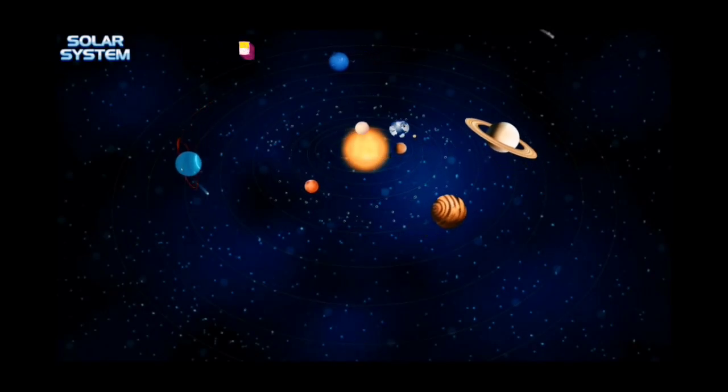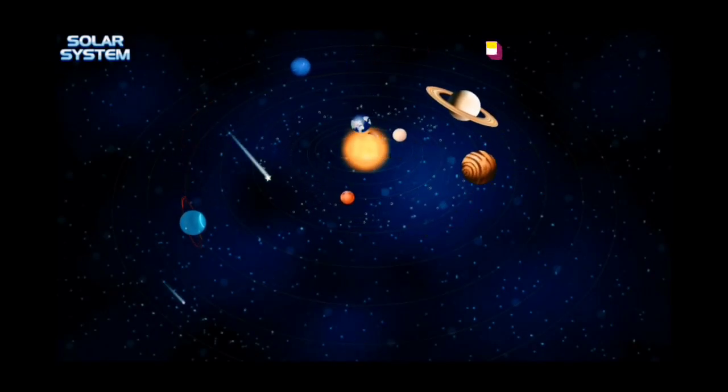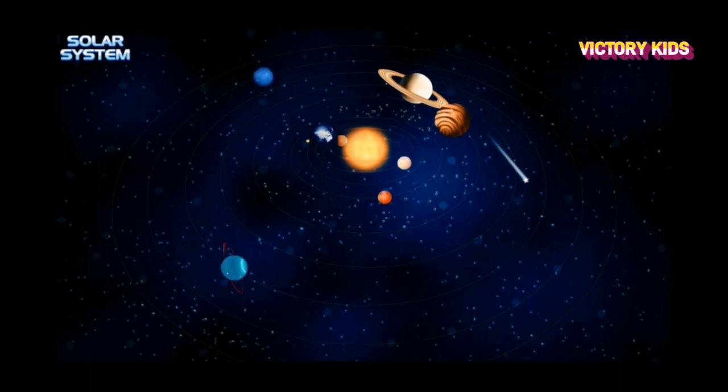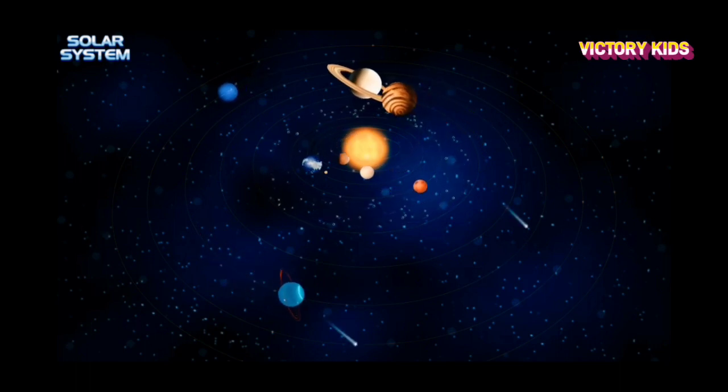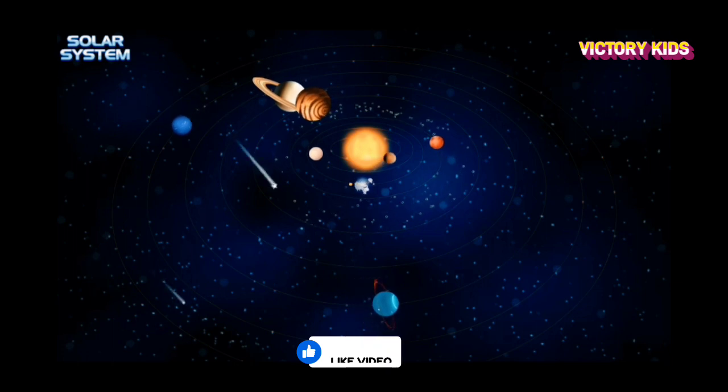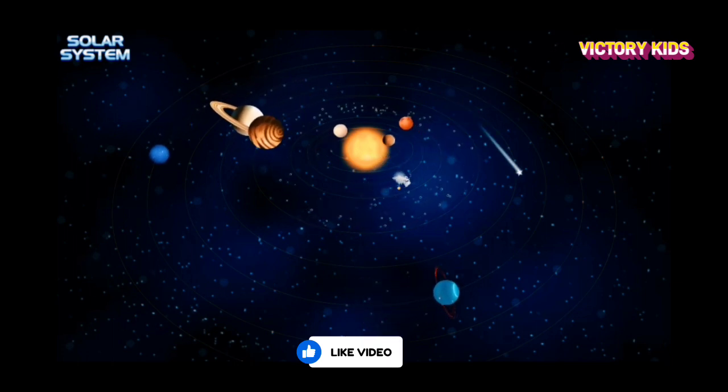The solar system is made up of one star, a handful of planets, more than a hundred moons, millions of rocky asteroids, and billions of comets.